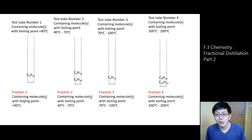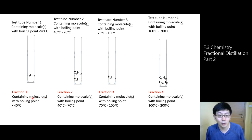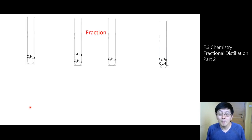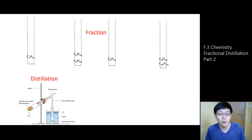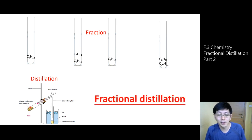We call each test tube a fraction of crude oil. Each fraction contains different molecules with different boiling point ranges. Because we separate the crude oil into fractions using a technique just like simple distillation, we call this technique fractional distillation. This is what we discussed in the last video.